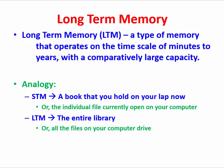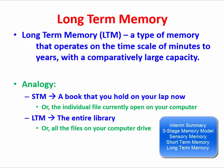As an interim summary, we can remind ourselves that we have a three-stage model of memory: sensory memory with very short timescales, then short-term memory — also called working memory — with a slightly longer timescale and limited capacity, and then long-term memory which is very capacious and operates over many years or decades.